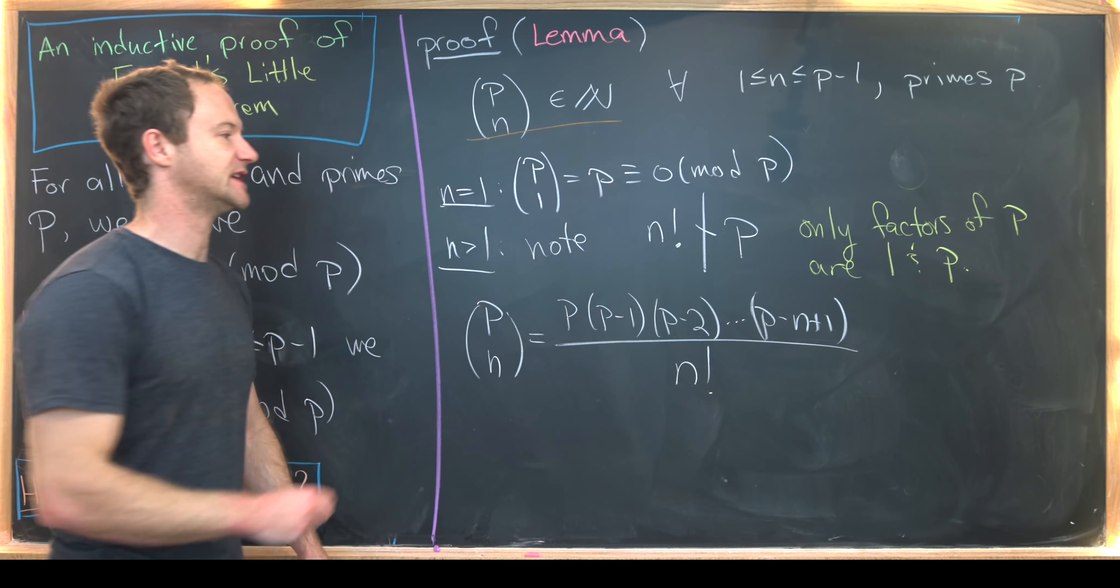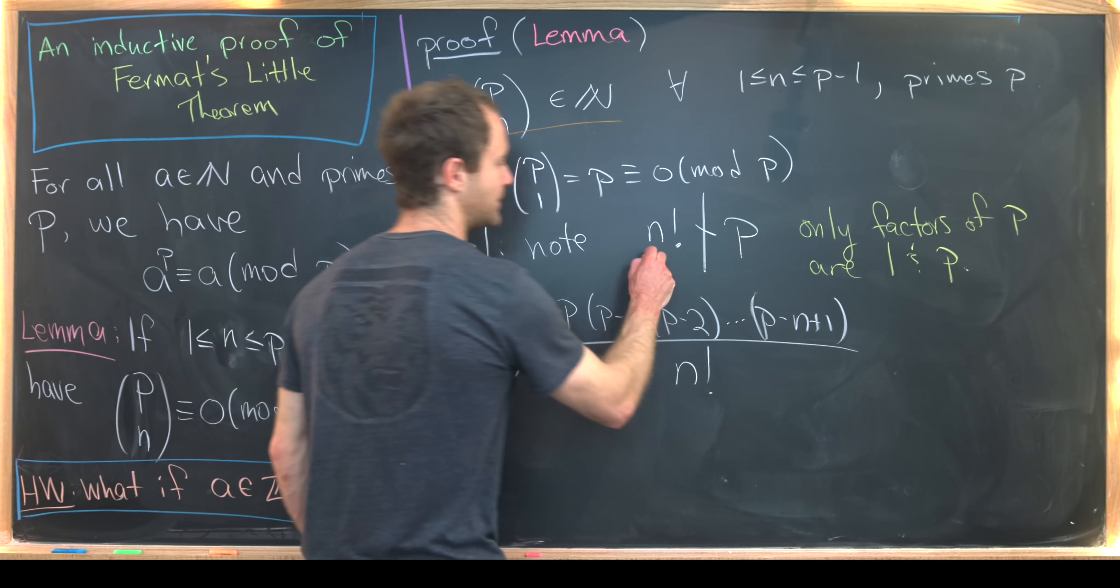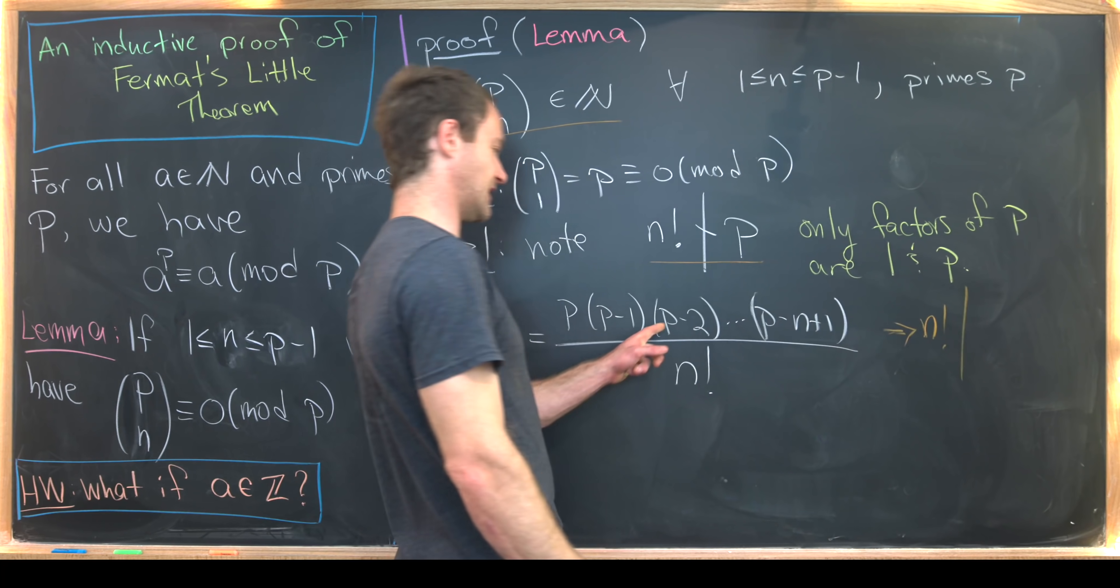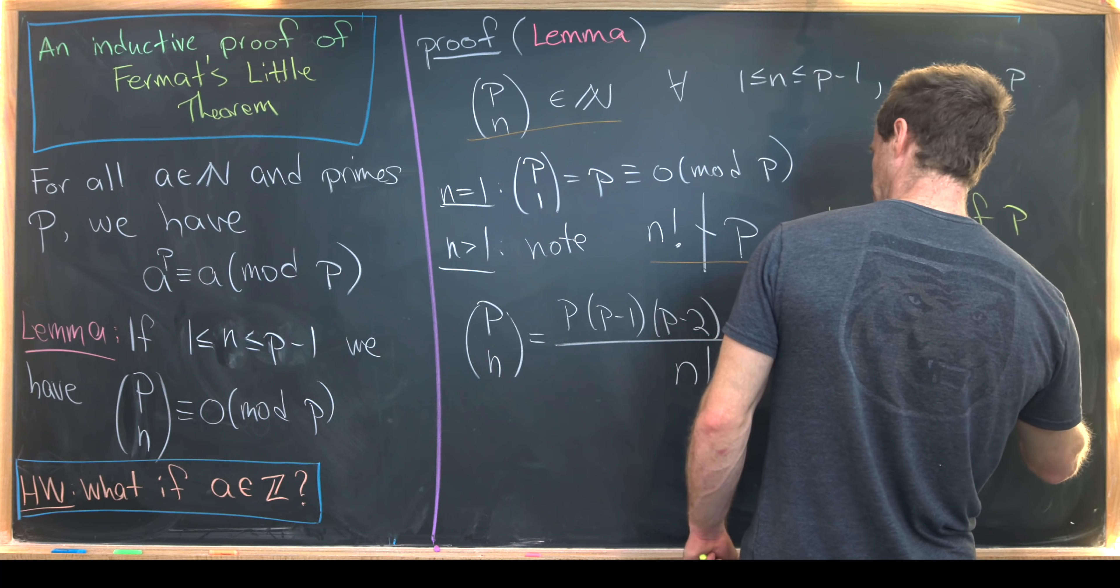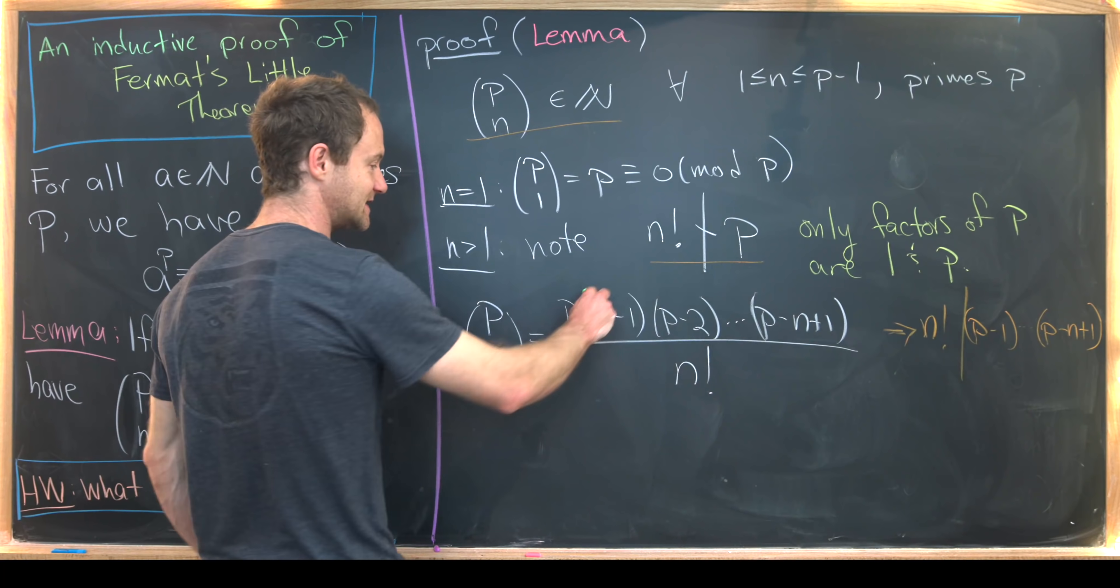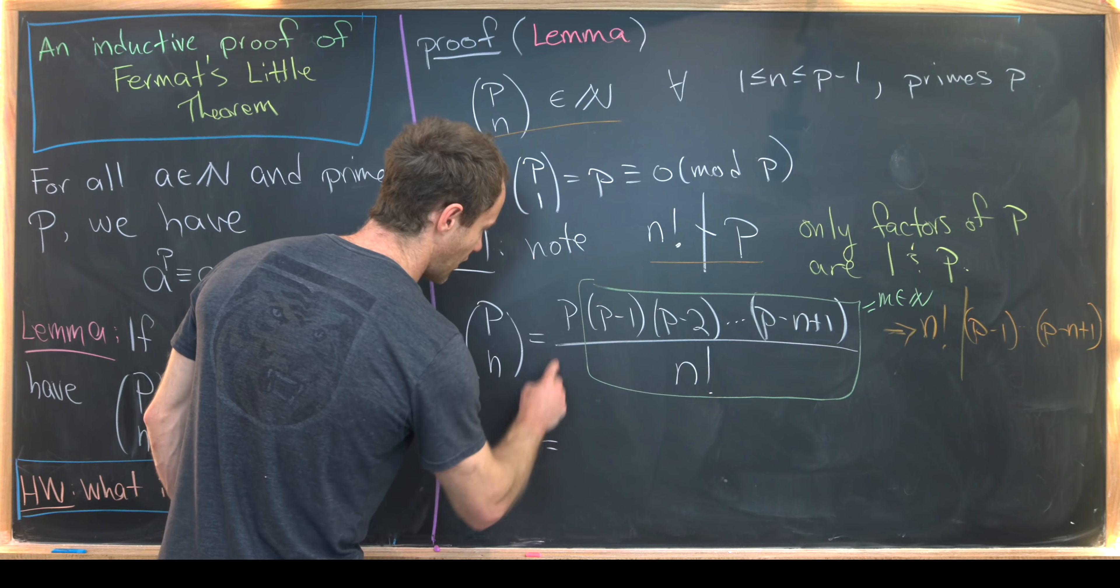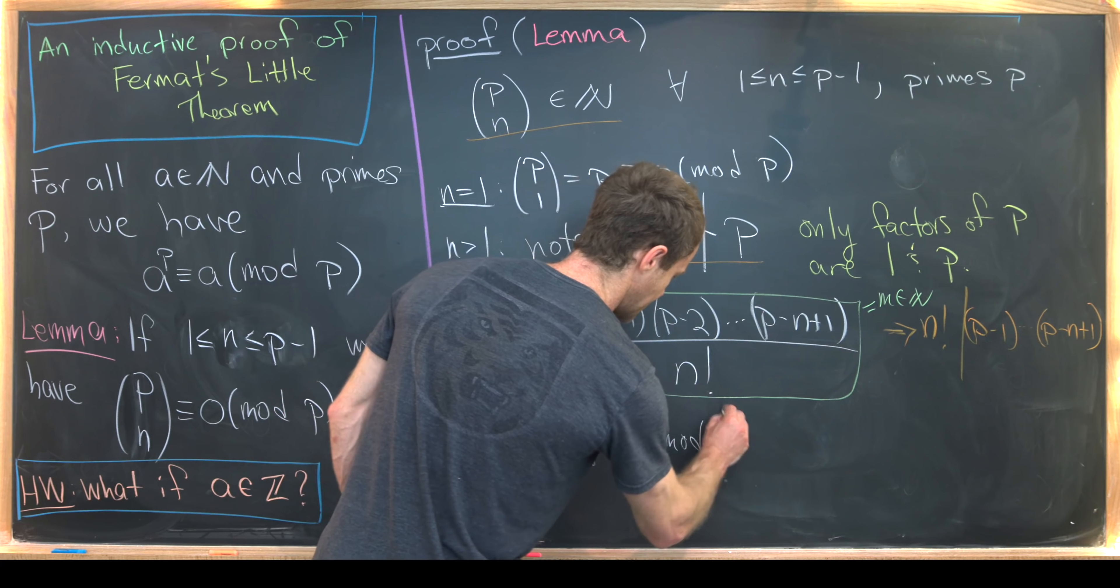Next, we'll put our two facts together. So our first fact is that P choose N is a whole number, and our second fact is that N factorial does not divide P, but that tells us that N factorial must divide the rest of this stuff. So that's P minus 1 all the way down to P minus N plus 1. But then that means that all of this is equal to a natural number. So we'll call it M, which is a natural number, which means we can write all of this as M times P, which is congruent to 0 mod P.